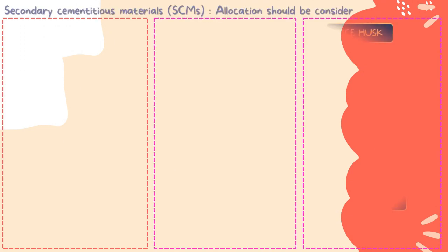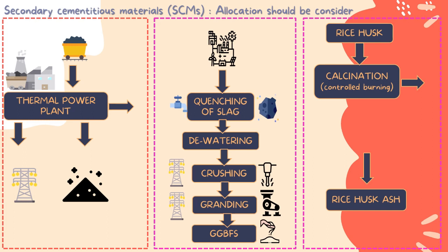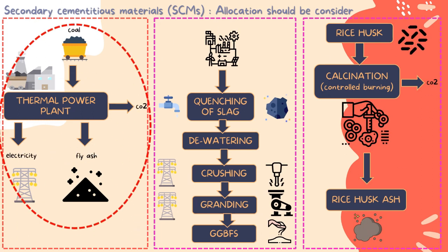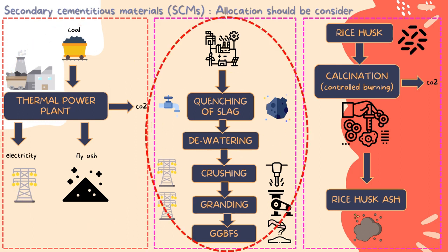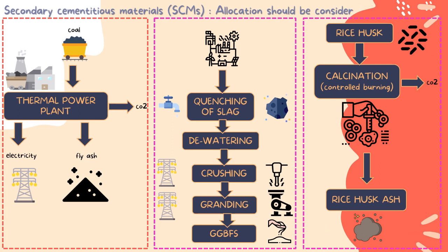After the process of aggregate production, it continues with secondary cementitious materials. During a thermal power plant process, coal is needed to produce energy. From this process, fly ash is produced from the burning of coal. Scientists say that fly ash can be an ingredient in producing cement. GGBFS, which is ground granulated blast furnace slag, comes from steel in the process of quenching of slag. It goes through dewatering, crushing, and granulating to become GGBFS. This process also requires energy, machines, and water for dewatering. Another material in the production of cement is rice husk ash, which comes from rice husk that goes through a calcination process, known as controlled burning. When it comes to burning, it produces carbon dioxide.